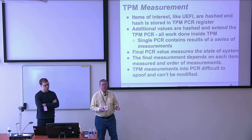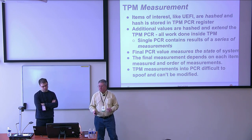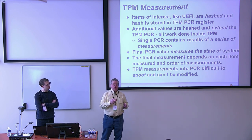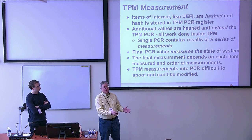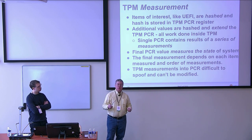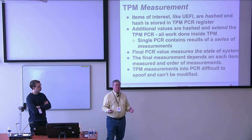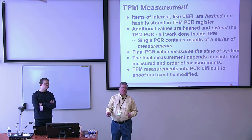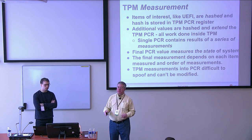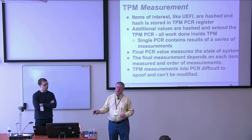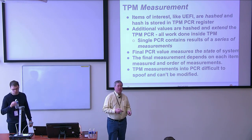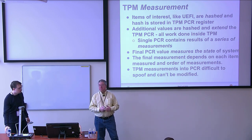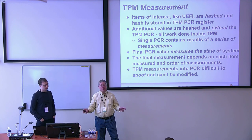This can be used in interesting ways. The PCR value is dependent on the contents of the things being measured and the order measurements are taken — and it is reproducible. If you have the same set of things measured in the same order, you get the same results. For example, a BIOS manufacturer can publish the PCR measurements of a BIOS version, and this can be used to determine if the BIOS has been modified or corrupted — from a single file in the system to universal things like a BIOS.